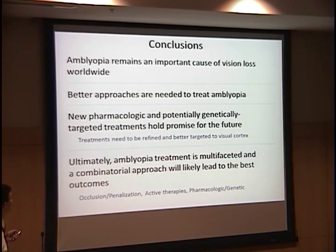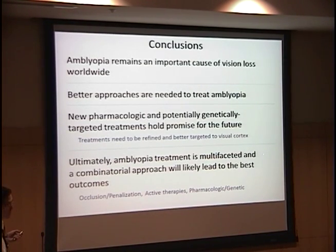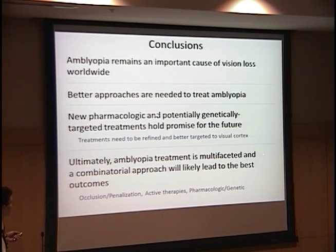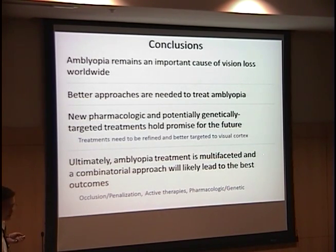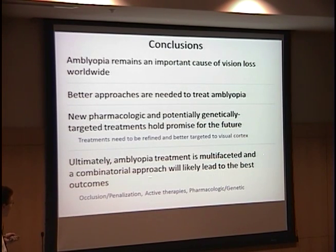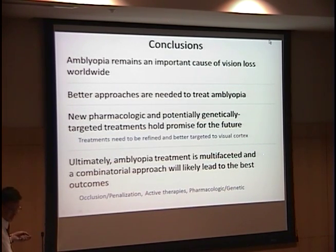In conclusion, amblyopia is still an important cause of vision loss and a big problem, and we do need better approaches to treating it. Pharmacologic and potentially genetically targeted treatments hold promise for the future, but obviously these treatments need to be refined and better targeted. Ultimately, amblyopia is a disease that needs to be attacked with a combinatorial approach that will probably lead to the best outcomes. Thank you very much for your attention — I'd be happy to answer any questions.